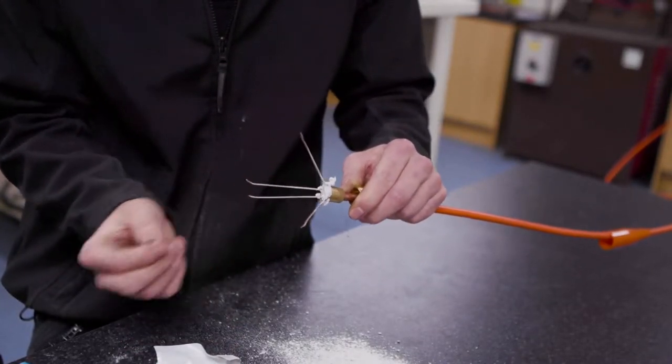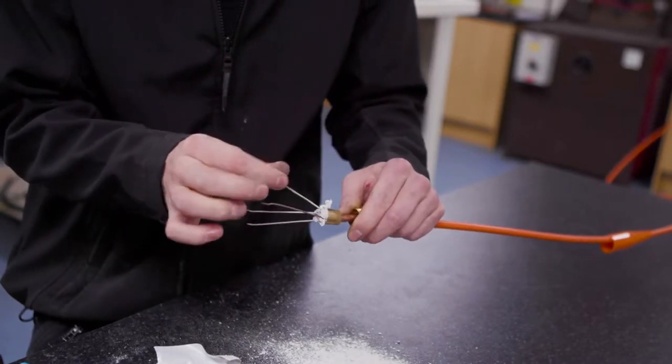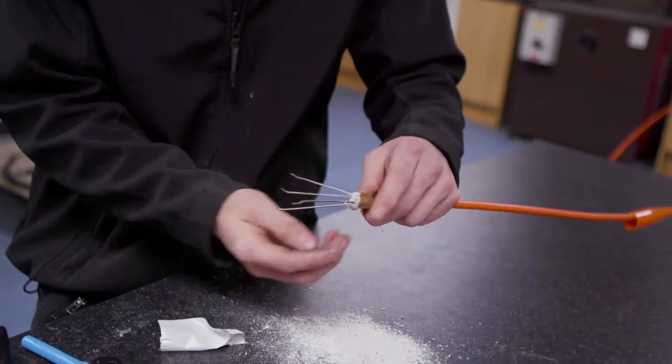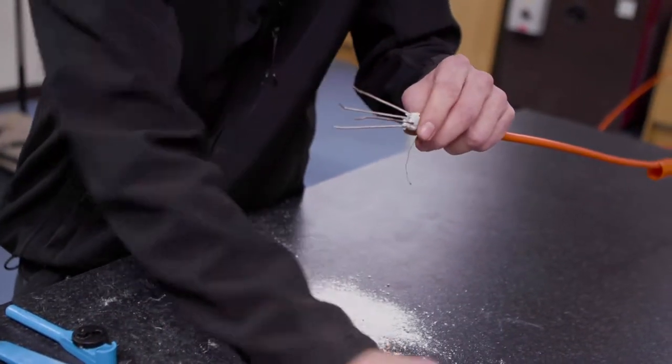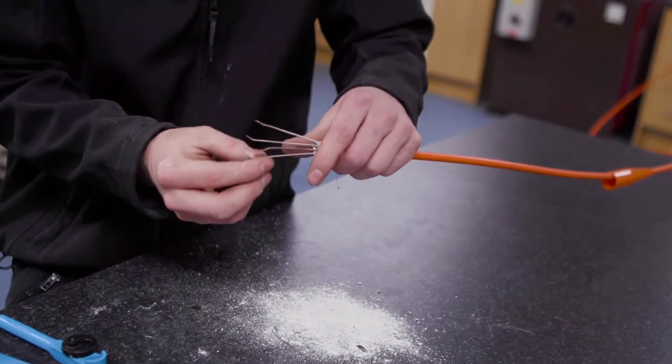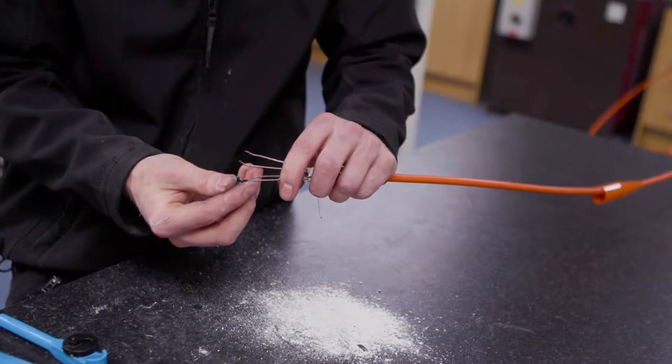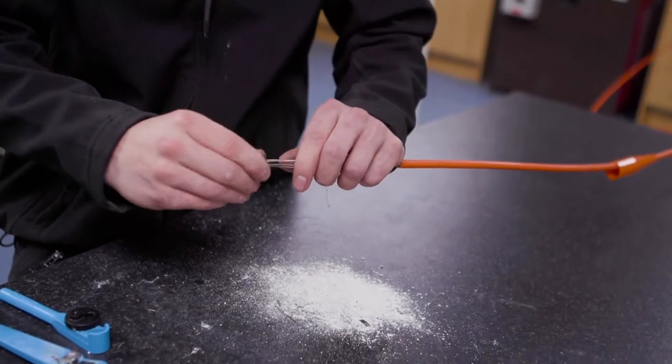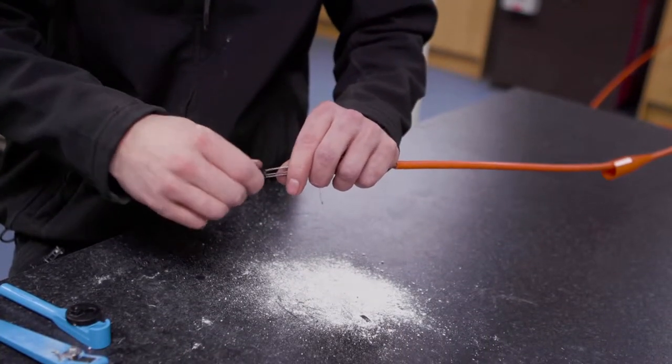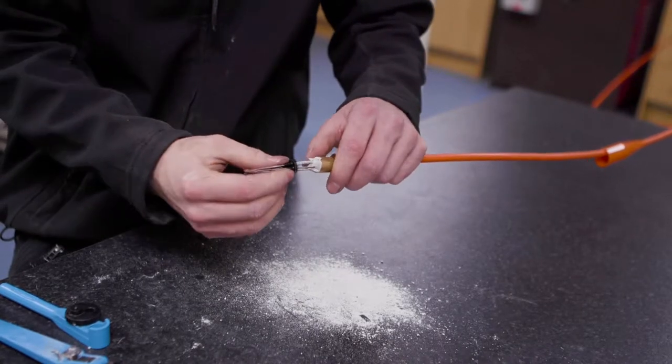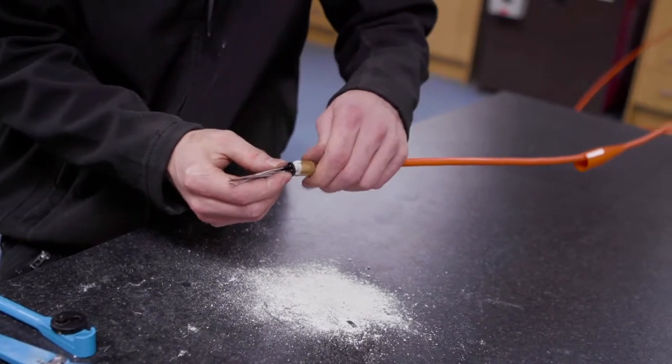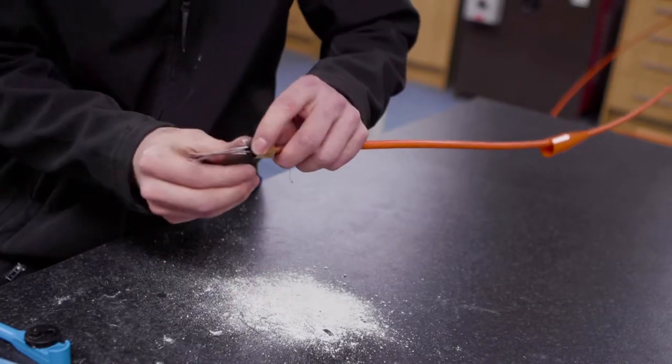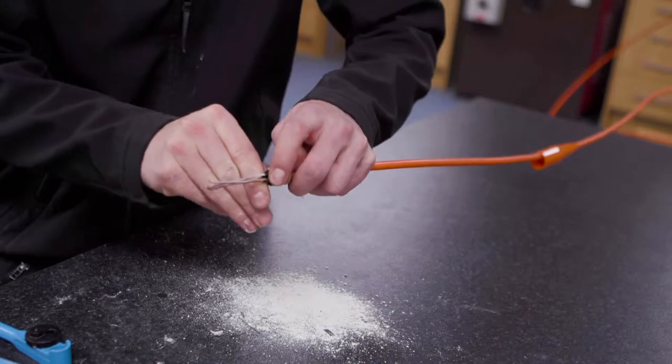Then we'll straighten our conductors back out, get rid of any of the excess compound, and put our stub cap over our conductors, pushing that all the way down to the top of the pot. Again, get rid of any excess compound and push it in so it's flush.